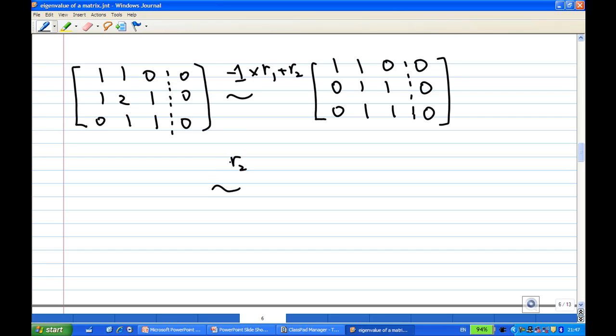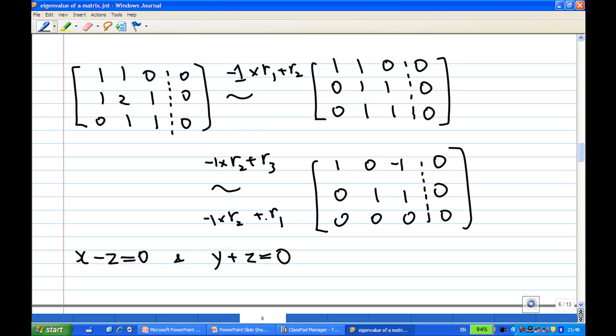Then, I continue to take the second row times minus 1, add to the third row. So, the second row is [0,1,1,0], and the third row becomes all zeros. I can take the second row times minus 1, add to the first row, and I will get [1,0,-1,0]. x minus z is equal to 0, and y plus z is equal to 0. z has no leading one, so z is free. x equal to z, y equal to minus z, and z is free.